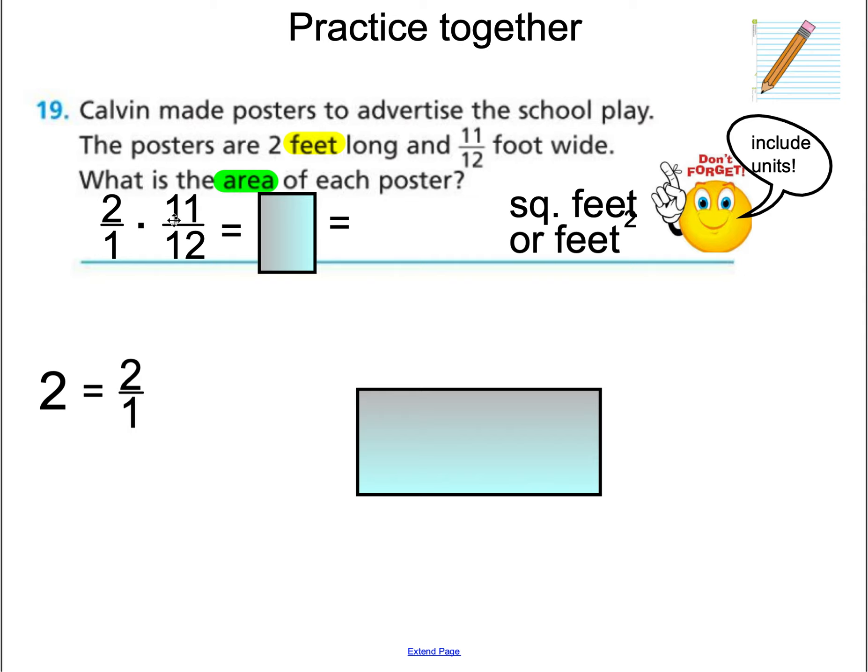All right. When multiplying fractions, remember we don't need to have common denominators. 2 times 11 is 22. That's our numerator. And 1 times 12 is 12. So we have 22/12. So what do we do when we have a fraction like this? Well, we can put the numerator in the box.